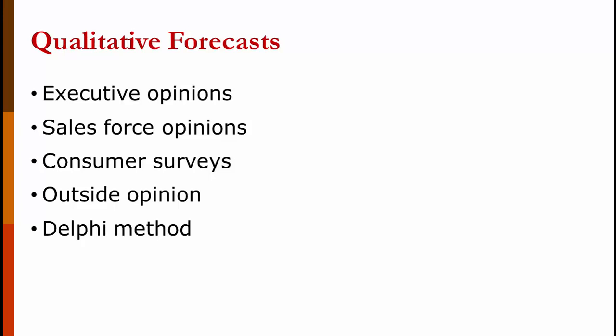And there's the Delphi method, named after the Greek oracle at Delphi. This is where you ask experts how many they think you're going to sell. You then share everyone's projection with everybody else. Ask them based on this additional information to revise their estimate. You continue doing this until you reach a consensus, or there's no further movement.